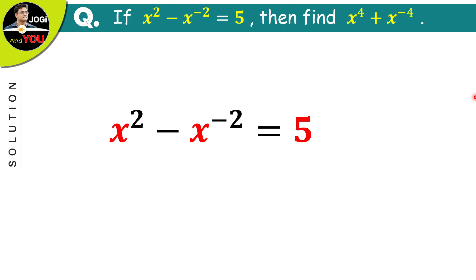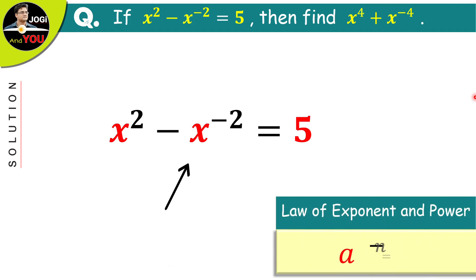First of all, for this second term, we will use an exponential rule which is if we have a to the power of minus n, then we can write this as 1 upon a to the power of positive n. So just do it like that and we have this.